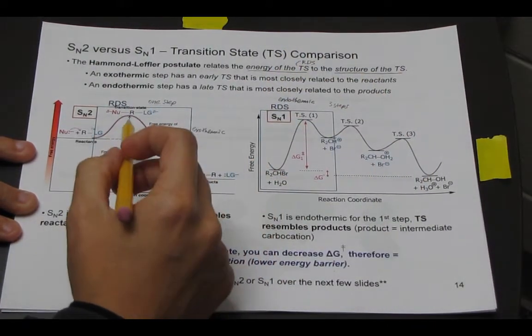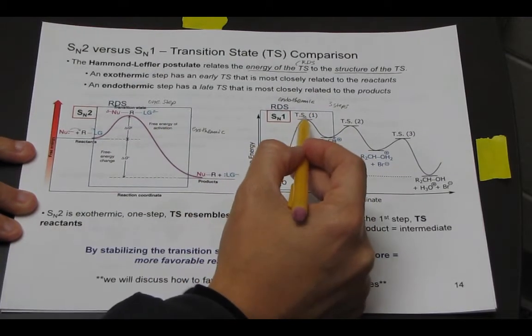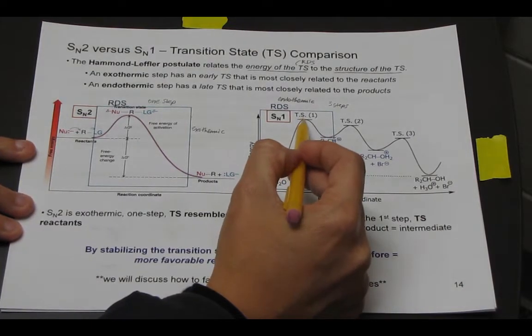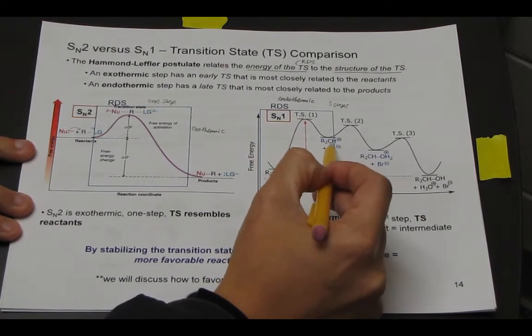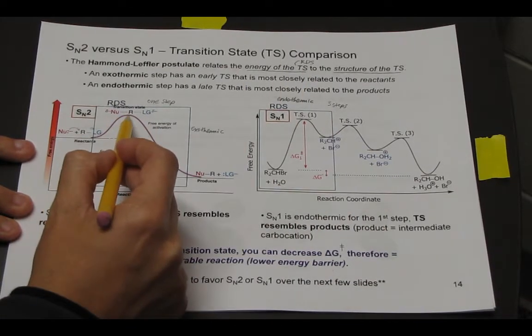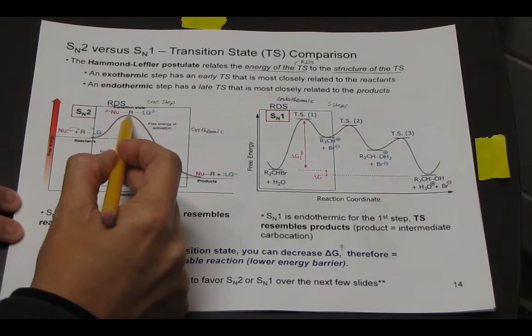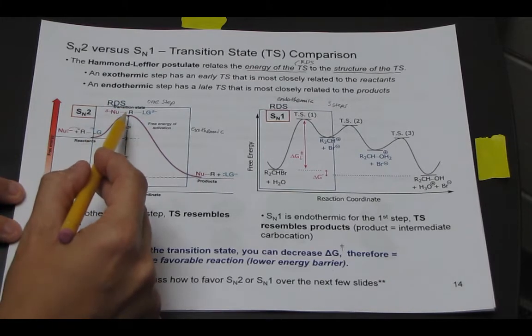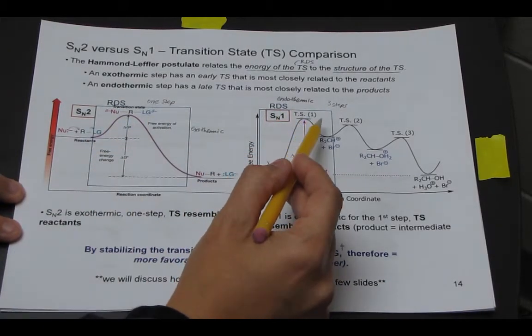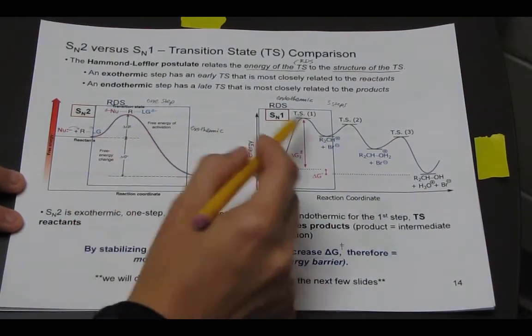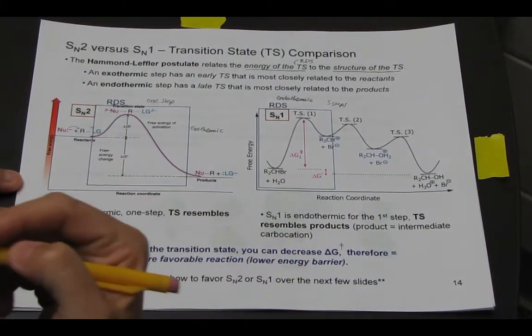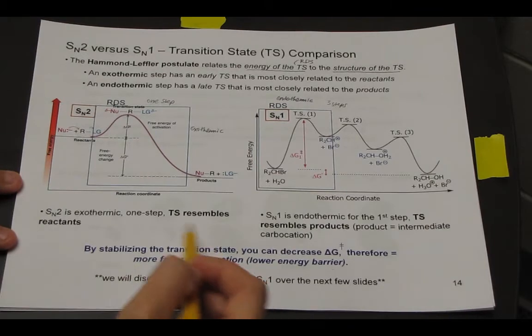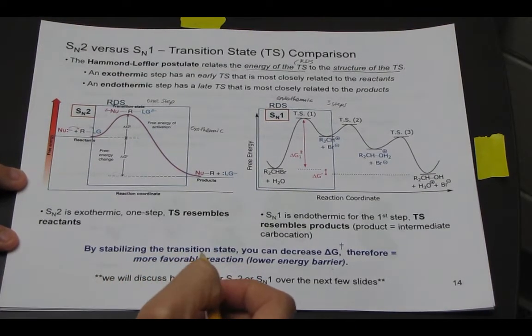And basically what the Hammond-Leffler postulate is saying is the structure of this transition state is going to most resemble what it's closest in energy to. So it's closest in energy to this structure, which is the carbocation, whereas in an SN2 reaction, the transition state is closest in energy to starting materials. So that's saying the bonds haven't quite yet formed yet, and here it's saying the bonds have mostly broken.